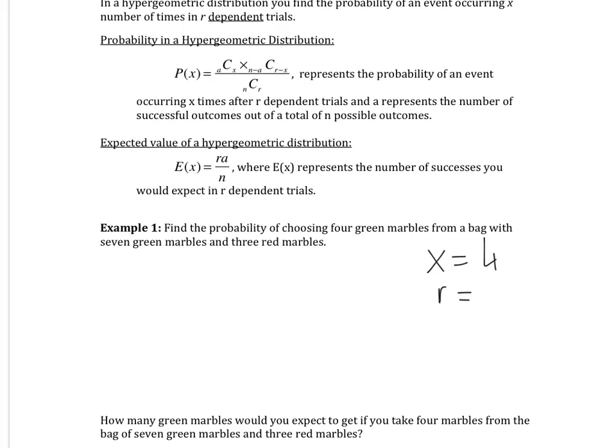We want them to be green. So your R is going to be how many success trials. So that's four. That's what we're looking for. N is your total possible outcomes.